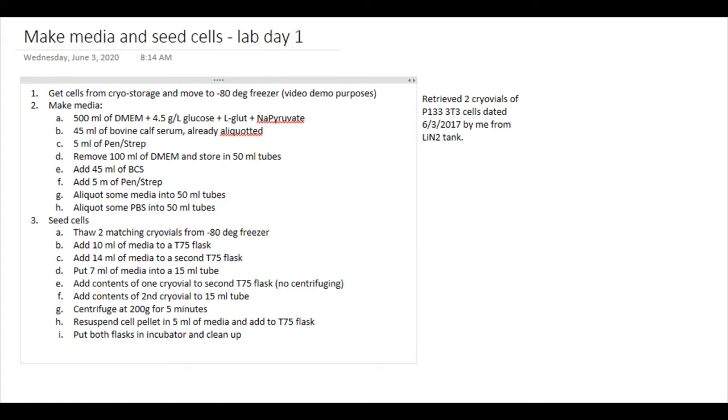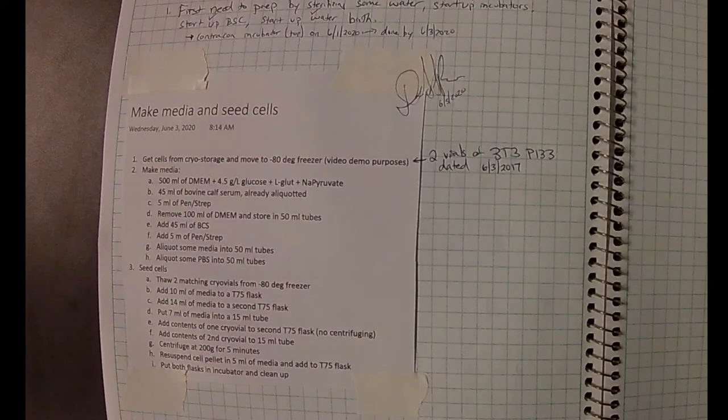I say I retrieved two cryovials and this is what they said on them. So that makes it clear that that is where I got the cells from. And so it's very easy to do. The other way to do it would be a physical lab notebook, which you can see pictured here.